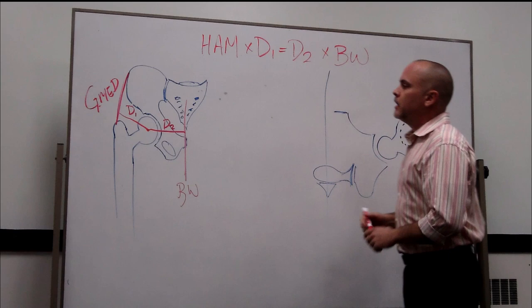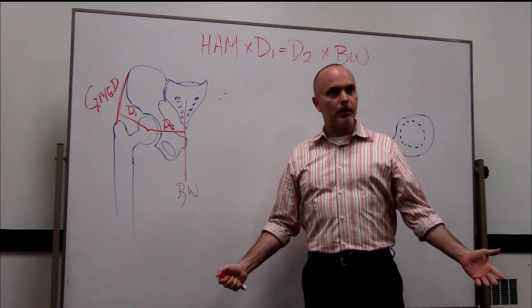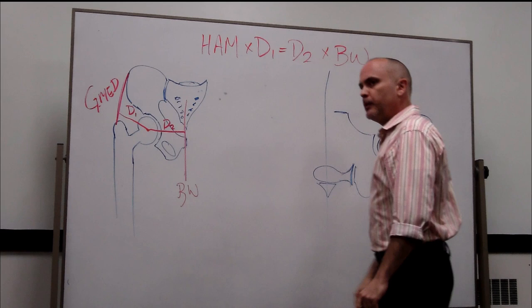So when everybody thinks of this, what gait do you think of? What's it called? The pathologic gait pattern. Starts with a T. Trendelenburg gait. So there's a compensated and an uncompensated Trendelenburg gait. You guys know the difference?